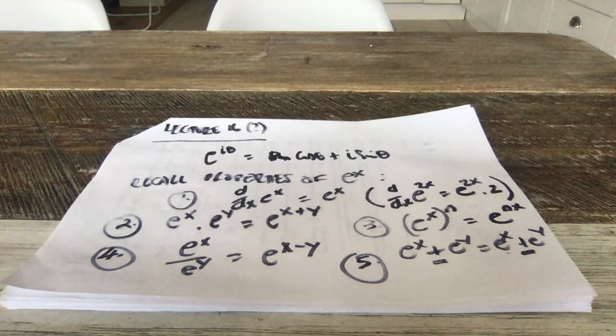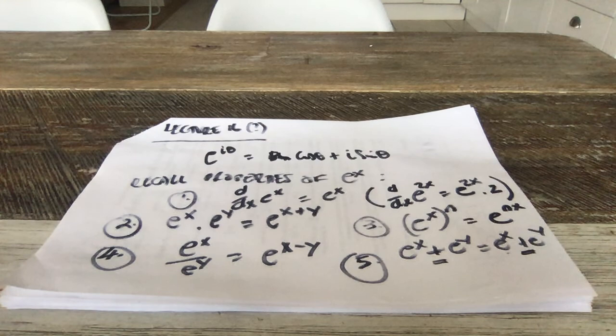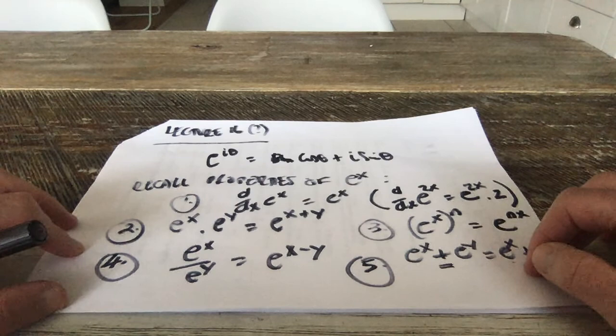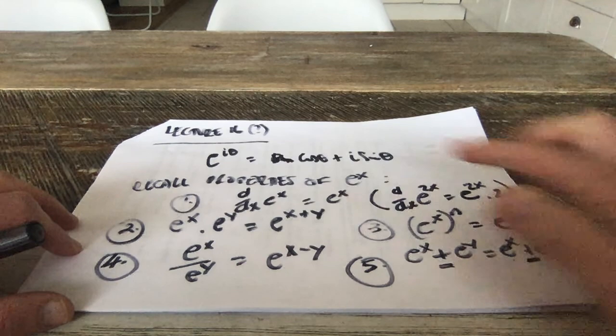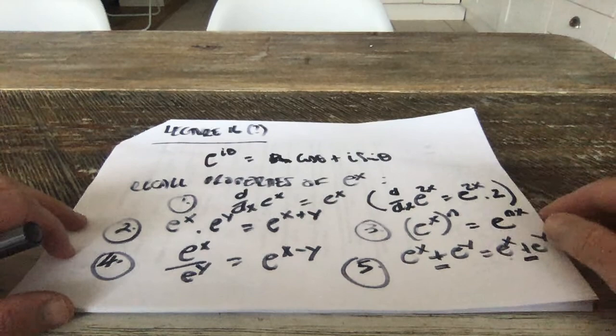We'll be talking about this when we start looking at multiplication and division of complex numbers, and how using the polar form is a lot easier. But these properties of e^x apply in a complex situation too — exactly the same. Instead of x, you're going to have ix.